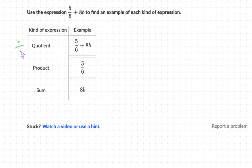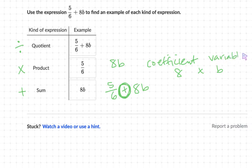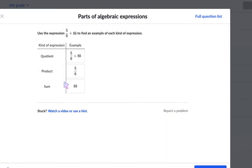Alright, so quotient we remember is division, product is multiplication, and sum is addition. So let's start with sum. It needs to have addition there. Well this one has multiplication. This one has a fraction bar so it's division. So it's got to be 5/6 plus 8b. That one has addition between it. Product has multiplication. That would be 8b because 8b is 8 as the coefficient being multiplied by b, the variable. So that's the product between those two factors. And then quotient would be that last one which is 5/6 because it's the same as 5 being divided by 6. The fraction bar tells you it's the same as division. So again, sum has the addition, product the multiplication, and quotient the division.